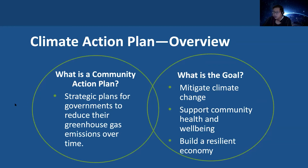First, I wanted to give an overview of what a Climate Action Plan is. Community action plans are often strategic plans that various types of government or government agencies use to reduce their greenhouse gas emissions over time. Climate action plans have specific goals about mitigating climate change impacts, supporting community health and well-being, as well as building a resilient economy for their community.